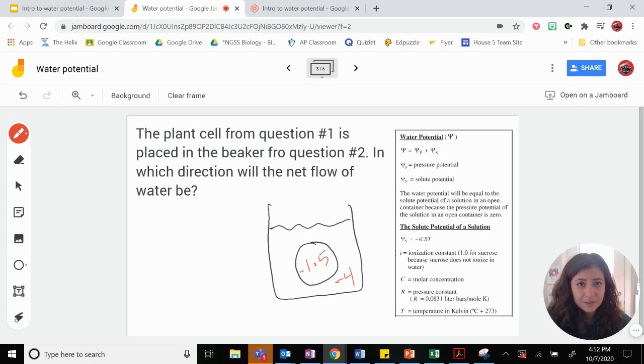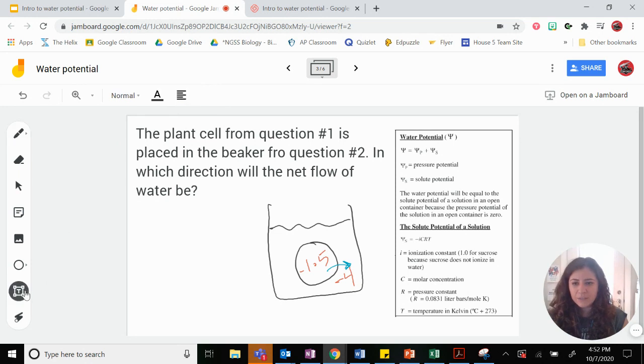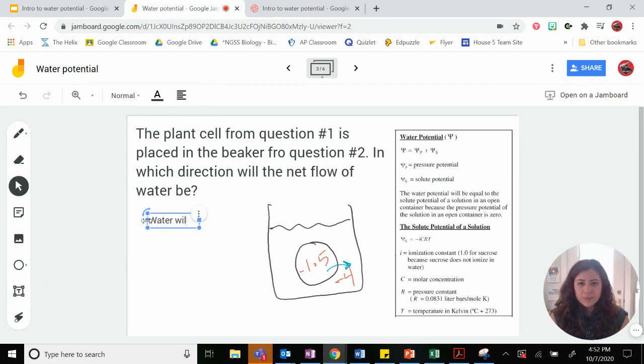And which way is water going to flow? Think about it for a second. So it's going to go to the more negative number, right? The more negative number. So which way is it going to go? It's going to leave the cell. Water is going to go from the cell into the beaker. It's going to leave. So the direction of water flow, we can say water will leave the cell. So the cell would lose weight. And there you go. That's our first round of practice with some of these water potential problems.